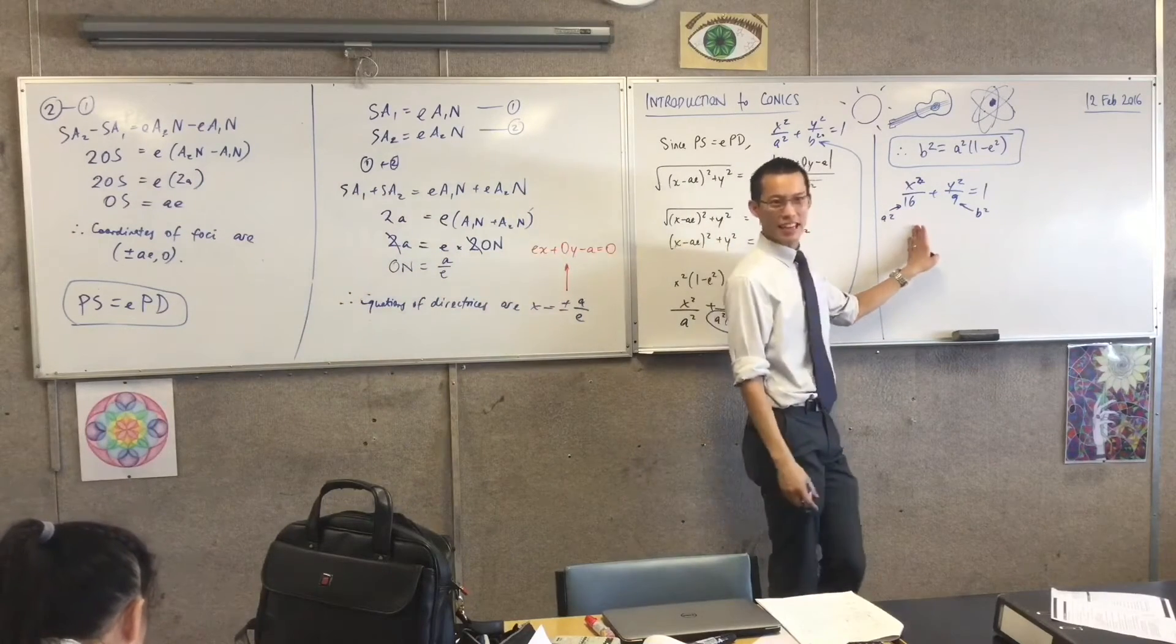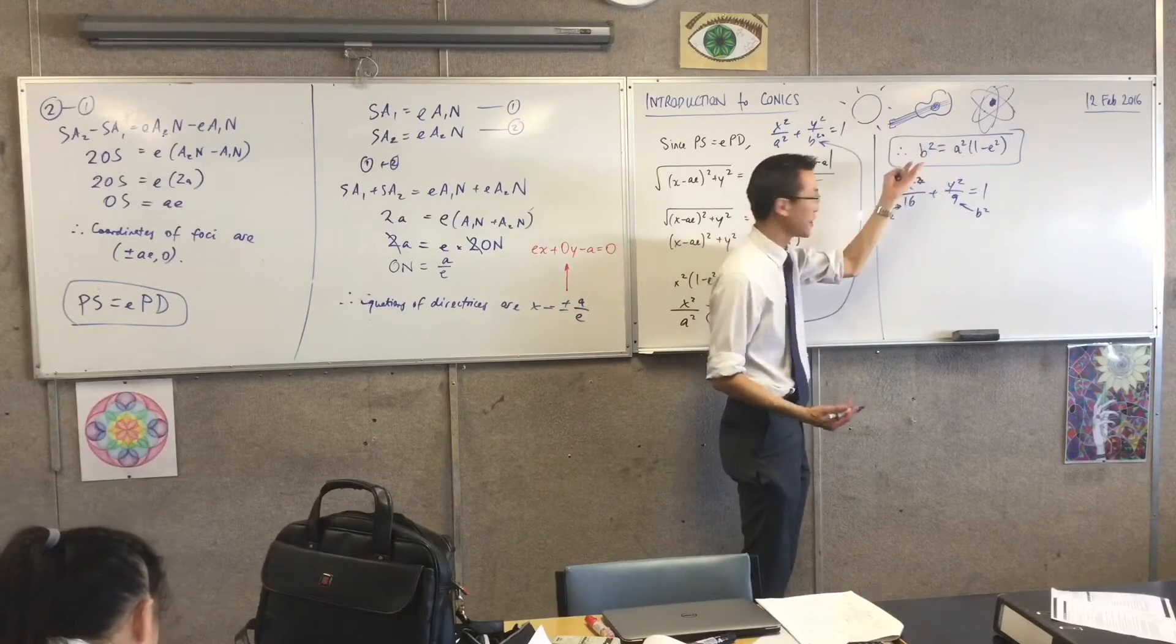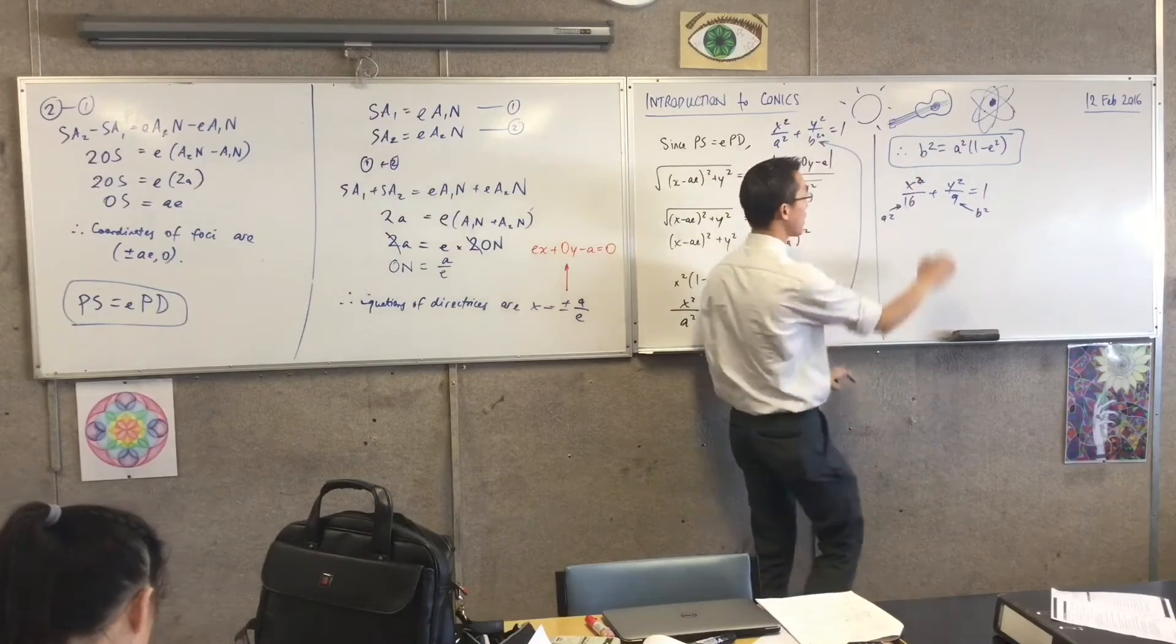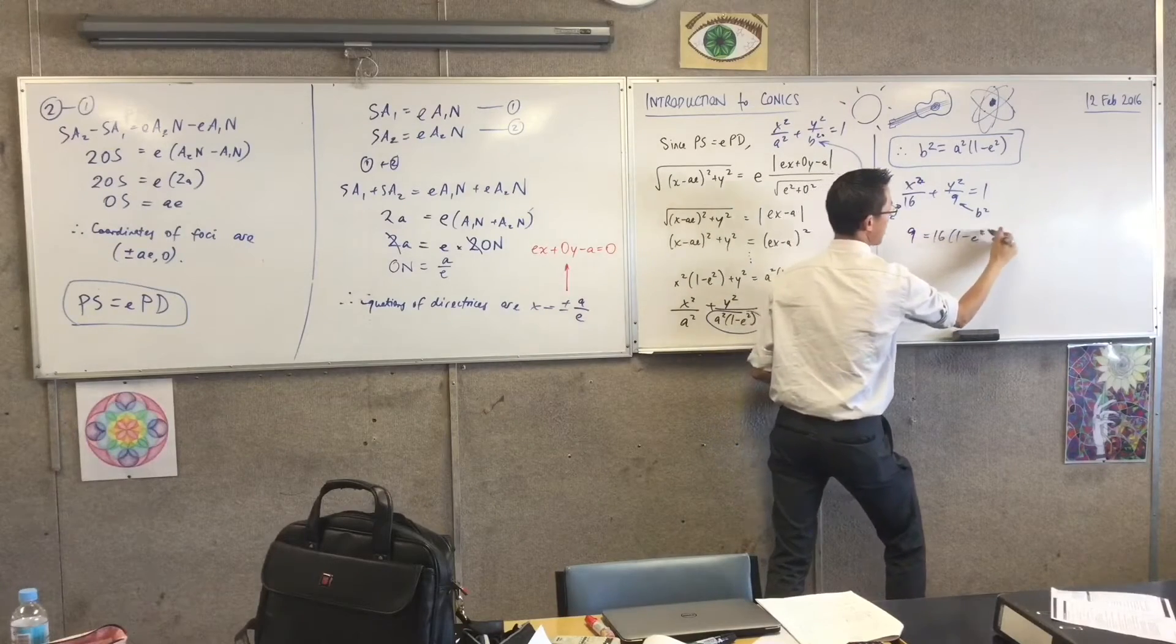I don't even need to think, oh, what's the square root of that? It's 4, because in fact what I want is a squared, b squared, right? So I'm just going to chuck it in and watch. This is going to be 9 equals 16 times 1 minus e squared.